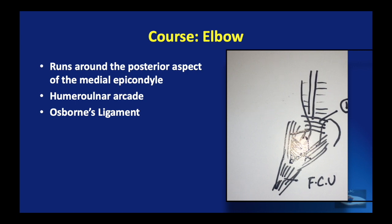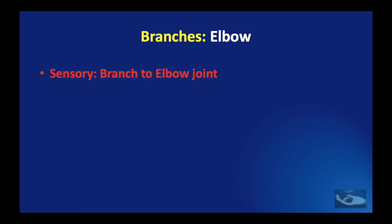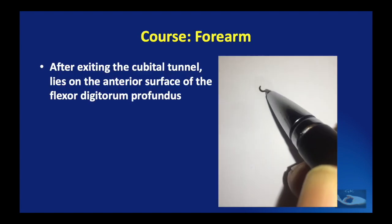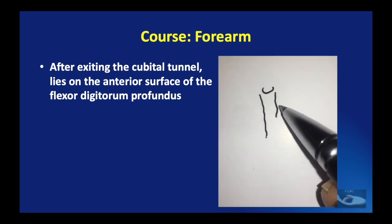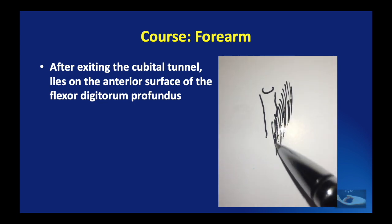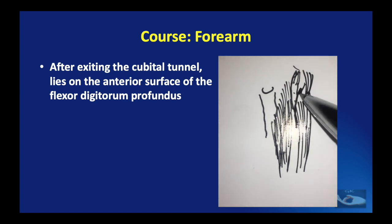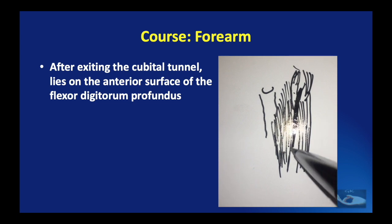This segment of the ulnar nerve's path under Osborne's ligament is known as the cubital tunnel. The nerve exits the cubital tunnel by passing between the two heads of the flexor carpi ulnaris and enters the anterior compartment of the forearm. The first branch given off is a sensory branch to the elbow joint, and it may also give a motor branch to flexor carpi ulnaris. After exiting the cubital tunnel, the ulnar nerve lies on the anterior surface of the flexor digitorum profundus.